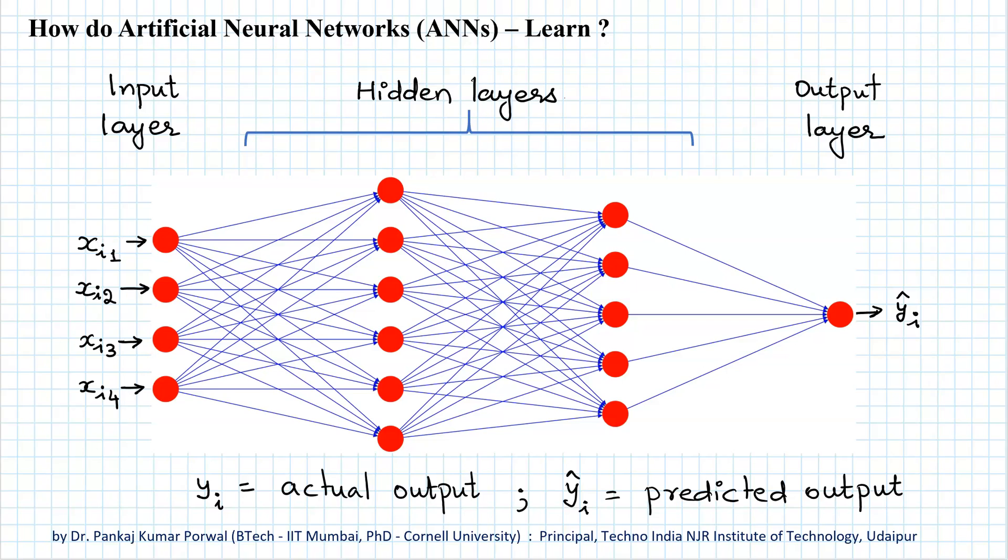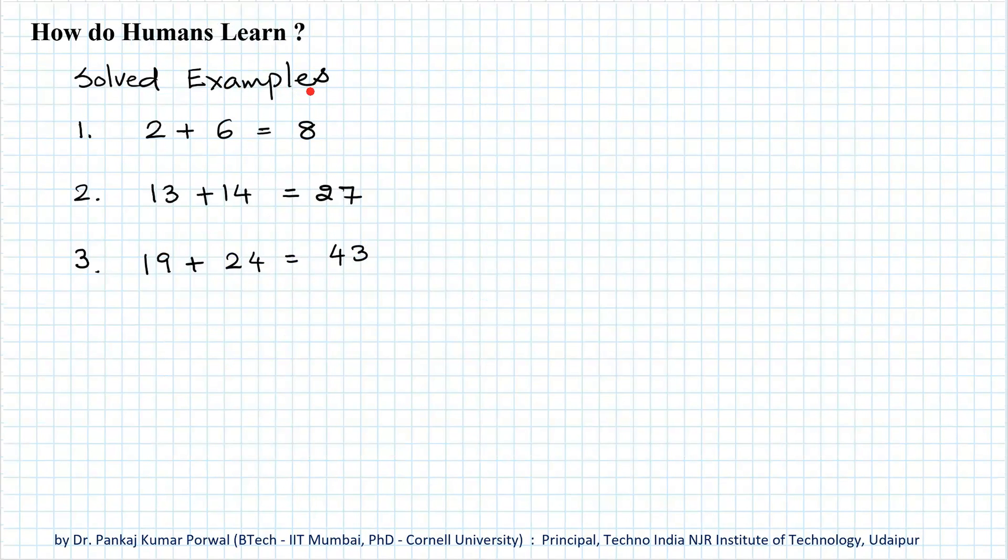So the next question we face is how do artificial neural networks learn to predict the correct output given some input? And in this also, the artificial neural networks get inspiration from the way humans learn. One of the ways in which humans learn is under supervision or guidance of a teacher or guide. For example, when we want to learn to solve new type of problems, we first go through some solved examples.